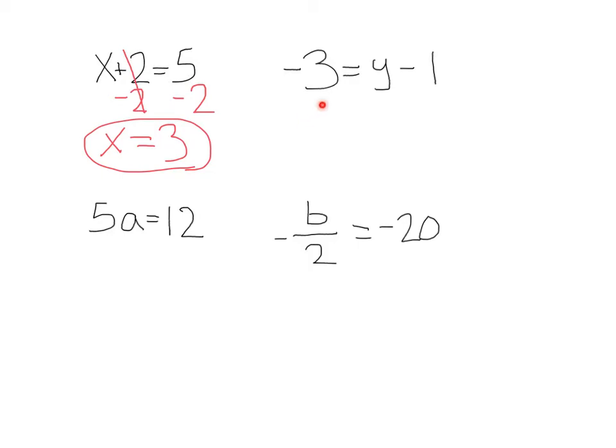Let's take a look at number 2. We have negative 3 equals y minus 1. Now this time the variable is on the right side. Well, that's okay. We still want to get the variable all by itself. I notice that I have a minus 1 attached to this y.